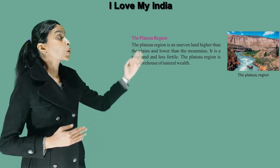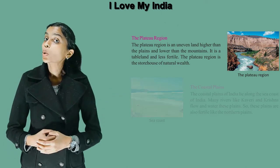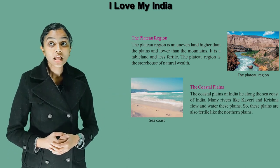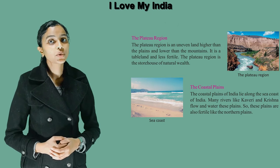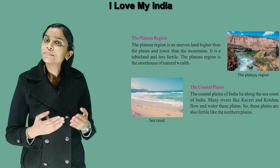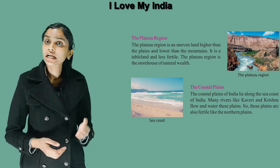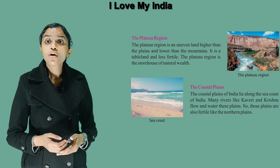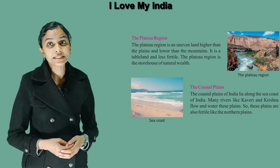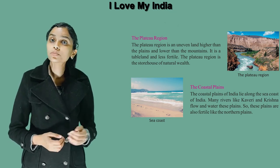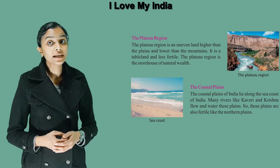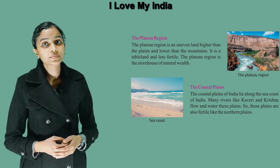The coastal plains of India lie along the sea coast of India. Many rivers like Kaveri and Krishna flow and water these plains. So these plains are also fertile like the Northern Plains.